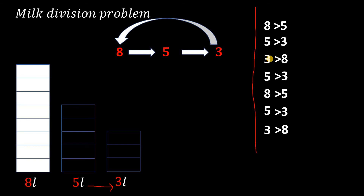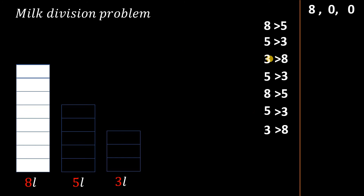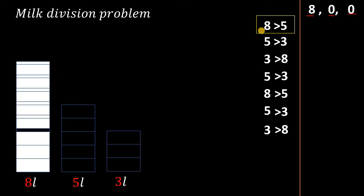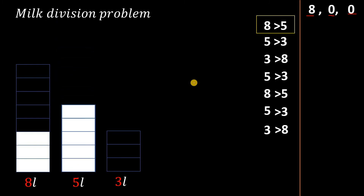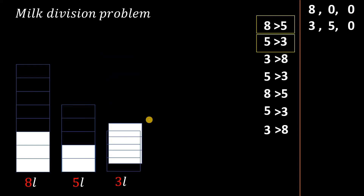Now let's work through the steps sequentially. At the start, we have eight liters in the eight-liter jar, nothing in the five-liter jar, and nothing in the three-liter jar. In the first step, we pour from the eight-liter jar into the five-liter jar, leaving three liters in the eight-liter jar and five liters in the five-liter jar, with nothing in the three-liter jar. In the second step, we pour from the five-liter jar into the three-liter jar, leaving three liters in the first jar, two liters in the second, and three liters in the third.